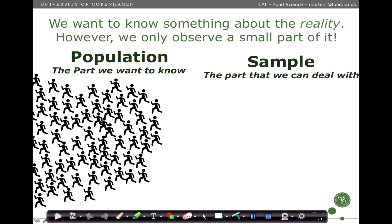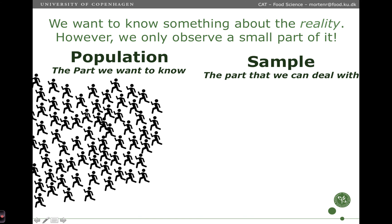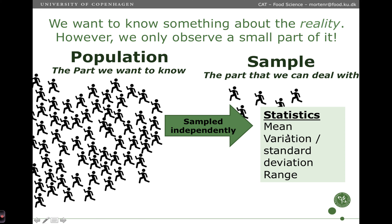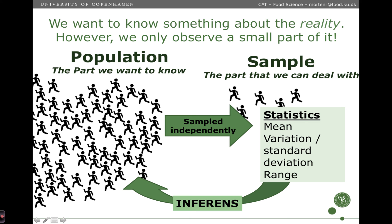The setup is like this. We have a population and that is what we want to know something about. But we cannot measure everything in this population, so what we do is we take out a sample — a few individuals which are sampled independently — and then we do some descriptive statistics on those samples. We calculate the mean, the variation, and so forth. Then we use those descriptive measures to tell something about the original population where the samples were drawn from. That is called inference.